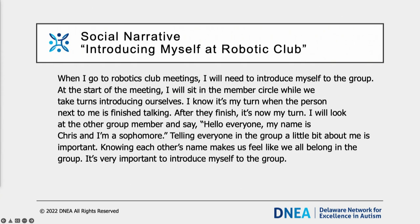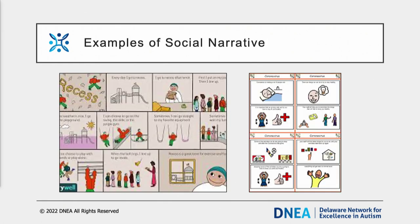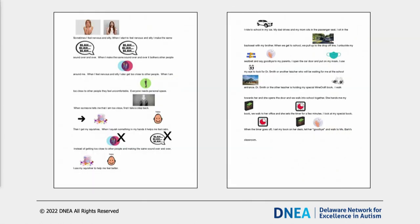Here is Chris's social narrative about introducing himself during the Robotics Club: 'When I go to robotics club meetings, I will need to introduce myself to the group. At the start of the meeting, I will sit in the member circle while we take turns introducing ourselves. I know it's my turn when the person next to me is finished talking. After they've finished, it's now my turn. I will look at the other group members and say, Hello everyone, my name is Chris and I'm a sophomore. Telling everyone in the group a bit about me is important. Knowing each other's names makes me feel like we all belong in the group. It's very important to introduce myself to the group.' Additional examples of social narratives with pictures are also available.